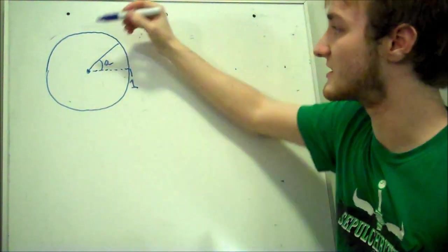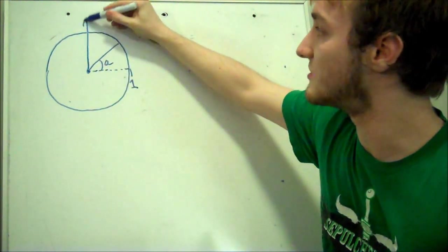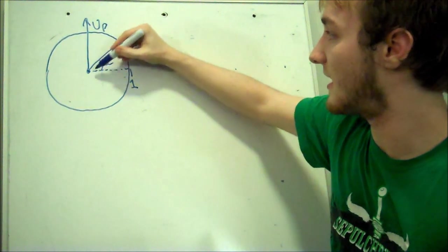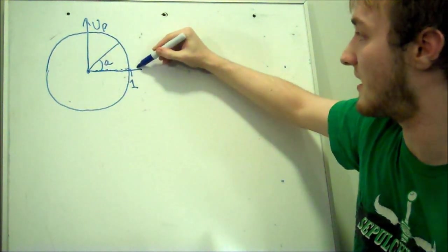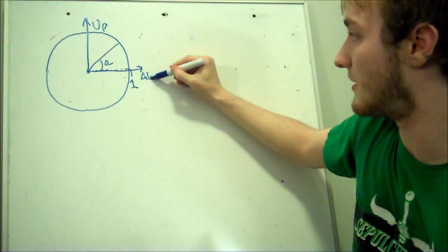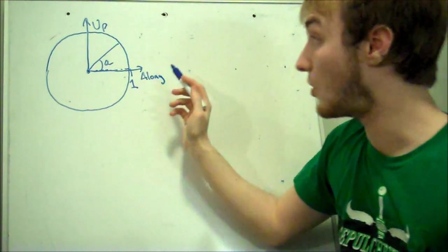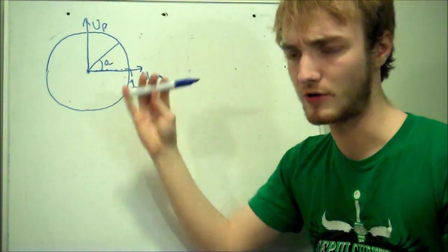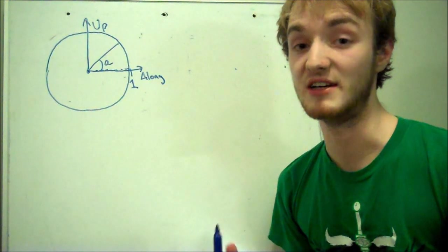So we're going to define two directions first. This is the up direction, and this here is the along direction. Up and along, also known as up and right, but I want to use along.